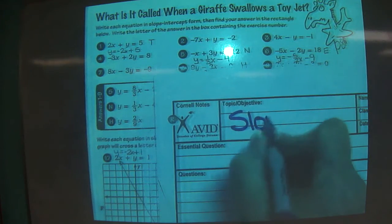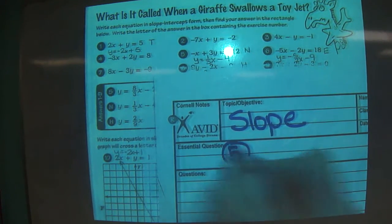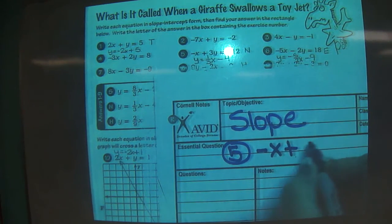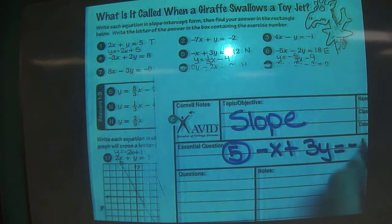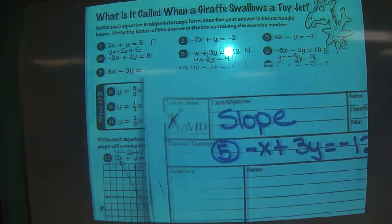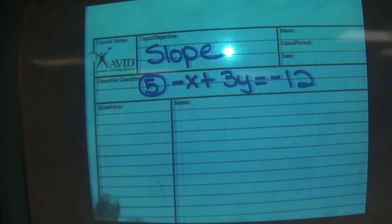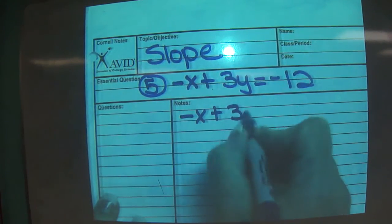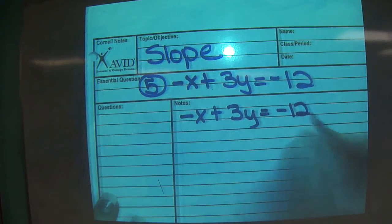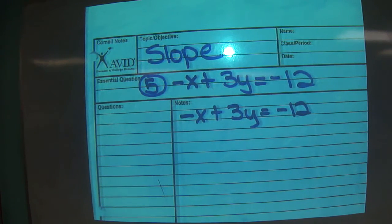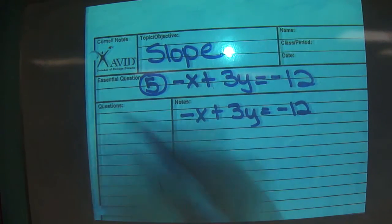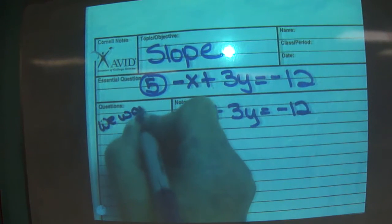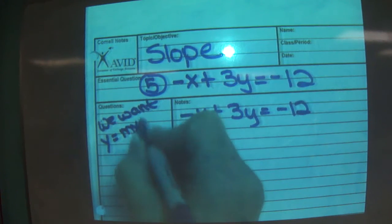This is slope, is our topic. And so like on number 5, we have negative x plus 3y equals negative 12. I'm going to go ahead and move this because we don't have to graph that one. But we know negative x plus 3y equals negative 12. Could we graph that if we wanted to? Not easily, could we? What format do we want it in? Y equals mx plus b.